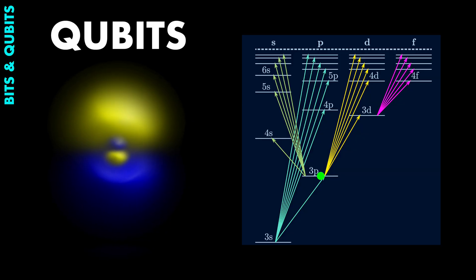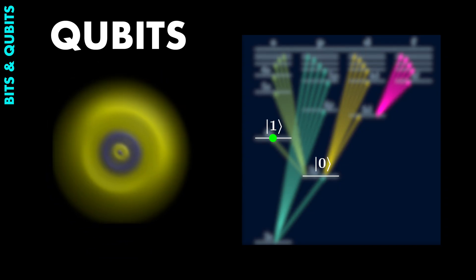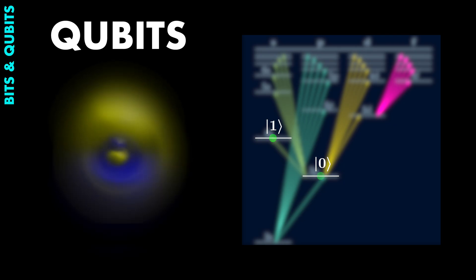But basically, all we need here is the following. A qubit is a quantum mechanical system that has two different states it can be in, which we usually call zero and one. And that isn't something special, but a quantum system can also be in any combination of those two states.